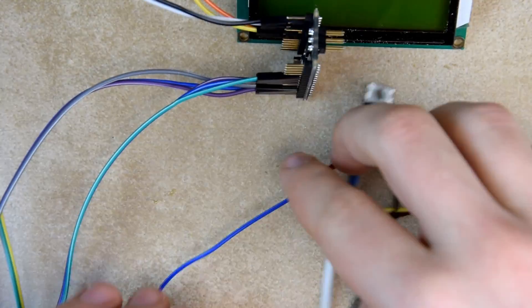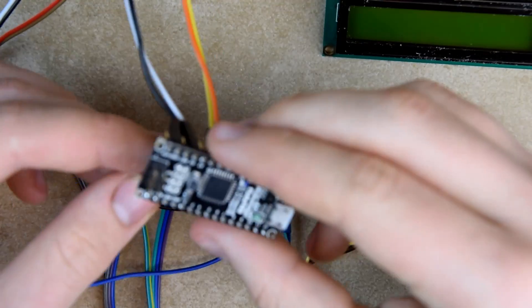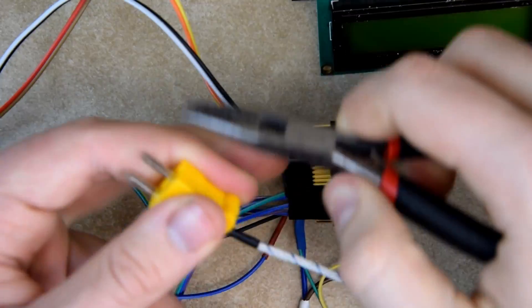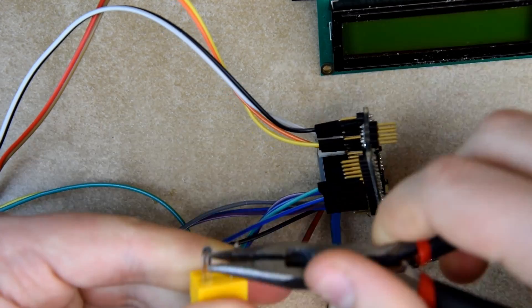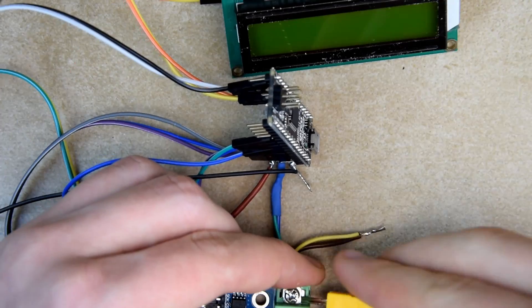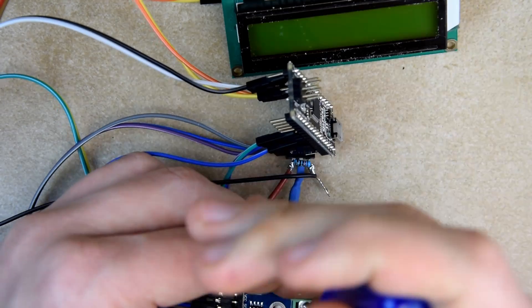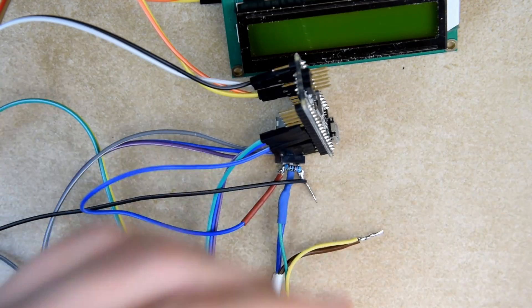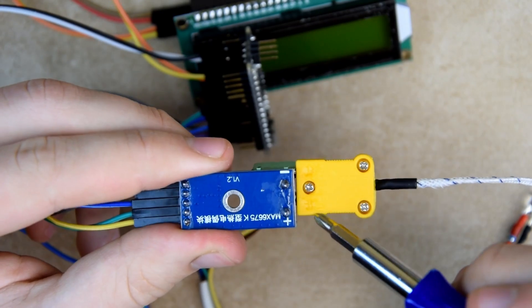And finally, the MOSFET assembly. To connect the thermocouple, we need to bend the pins slightly to fit them in the socket. The plus on the plug should line up with one on the board.